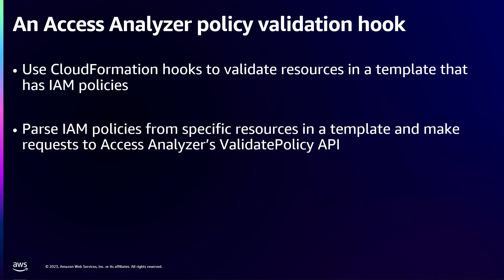When you create a CloudFormation hook, you specify the resource types it runs against — so we select resource types that have IAM policies, both identity and resource-based policies, and parse those policies from the CloudFormation template. In the Lambda function, we call Access Analyzer's Validate Policy API, which returns findings. We then evaluate whether those findings are blocking — i.e., should a finding fail the deployment or allow it to continue — and either fail or let the deployment succeed accordingly.